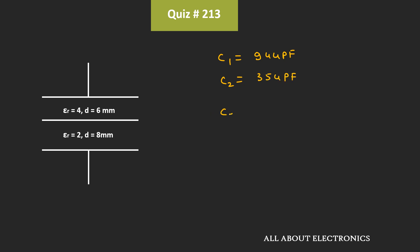So the total capacitance or the equivalent capacitance is equal to C1 C2 divided by C1 plus C2. That is equal to 944 times 354 divided by 944 plus 354, which is roughly equal to 257 pF. That means the value of the capacitance is equal to 257 pF.